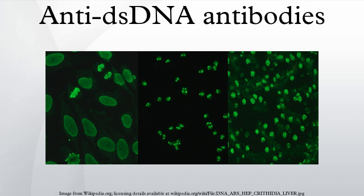Animal tissue was the first substrate for immunofluorescent detection of anti-nuclear antibodies and has been in use since the late 1950s. Liver and kidney tissue sections from animals such as rats are used to identify anti-dsDNA antibodies. This substrate has largely been superseded by the use of HEp-2 cells.